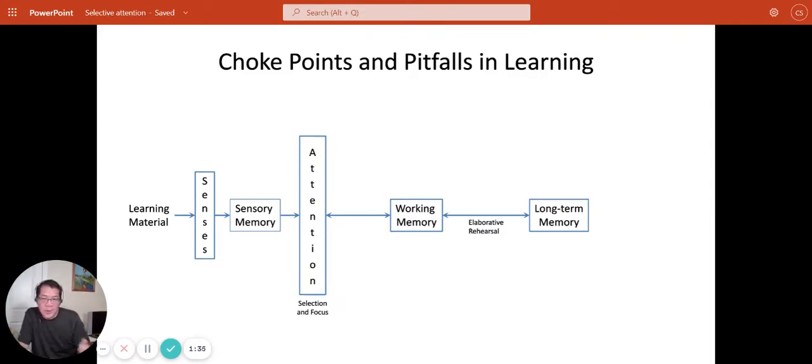Attention does two things for us. It selects information for further processing. We select what's relevant and we filter out everything that's irrelevant and allows us to focus and concentrate on information. So the focus and concentration is another challenge that's discussed in a separate video.